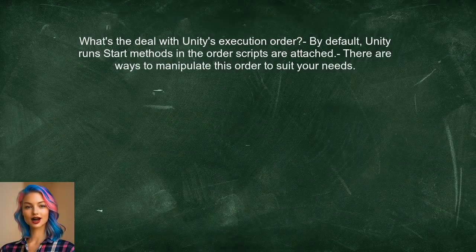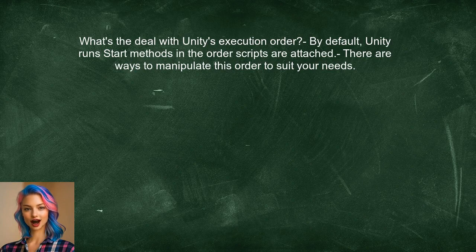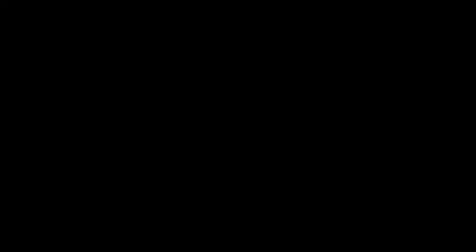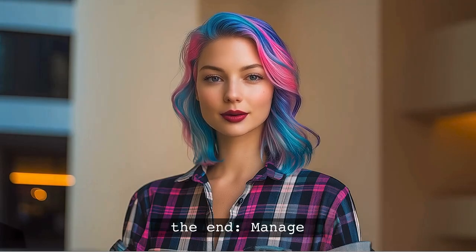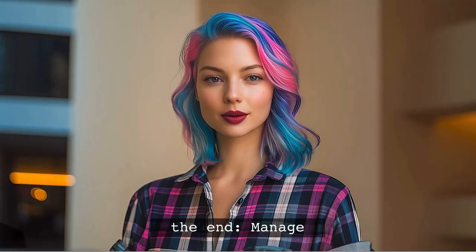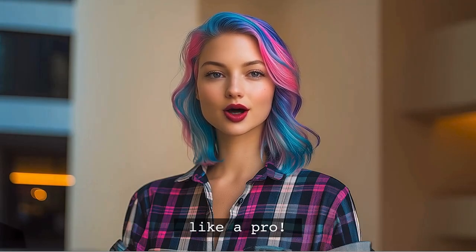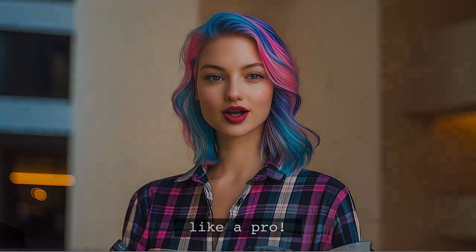So, what's the deal with Unity's execution order? By default, Unity runs the Start methods in the order the scripts are attached to the game objects. However, there are ways to manipulate this order to suit your needs. I've got a handy tip at the end that will help you manage script execution order like a pro.